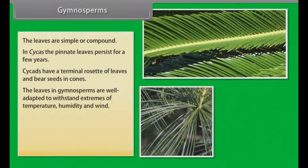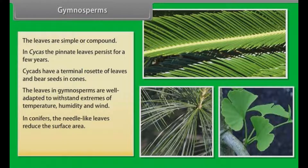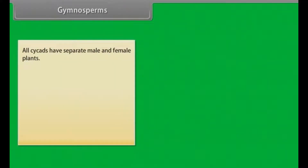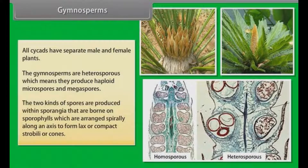The leaves in Gymnosperms are well adapted to withstand extremes of temperature, humidity, and wind. In conifers, the needle-like leaves reduce the surface area. Their thick cuticle and sunken stomata also help to reduce water loss. All cycads have separate male and female plants. Gymnosperms are heterosporous, meaning they produce haploid microspores and megaspores. The two kinds of spores are produced within sporangia borne on sporophylls, which are arranged spirally along an axis to form lax or compact strobili or cones.